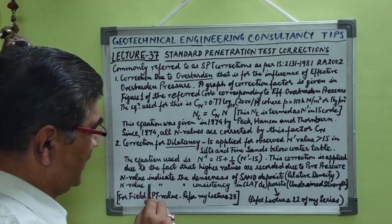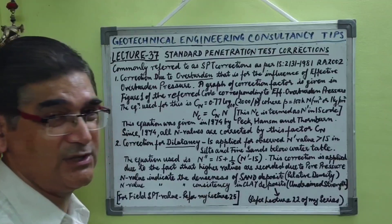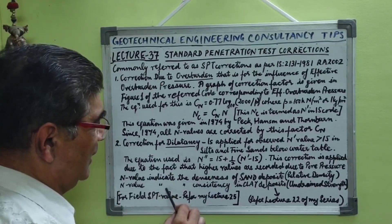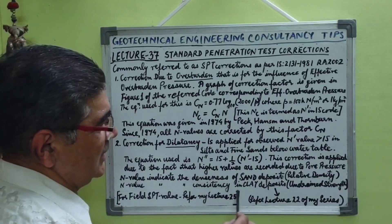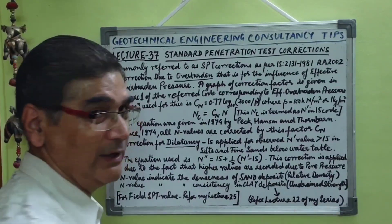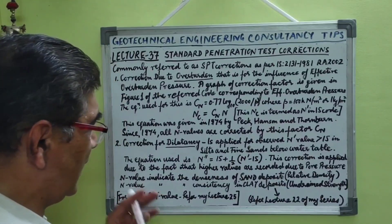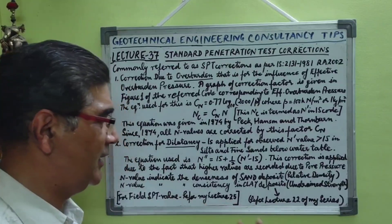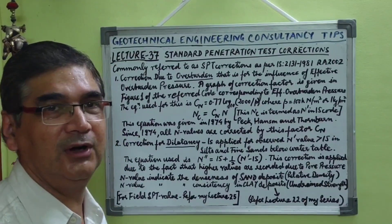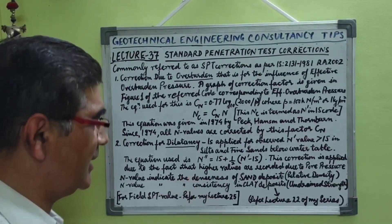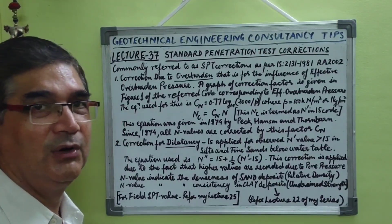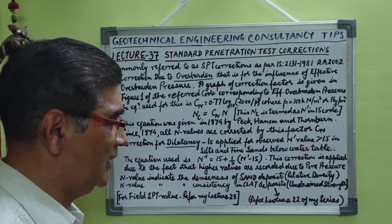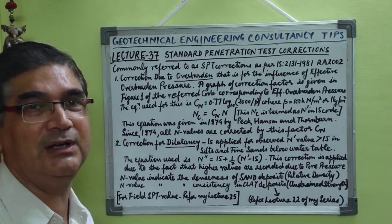The N value indicates the denseness of sand deposits, that is the relative density of sand deposits. For clay deposits, the N value indicates consistency, related to the undrained shear strength. In clay, the N value is not used quantitatively for settlement analysis, but in sand these N values are used for settlement analysis after shear strength calculations have been completed.